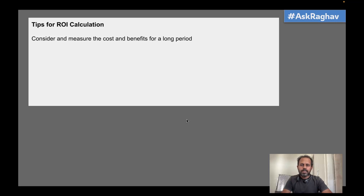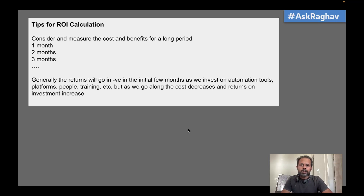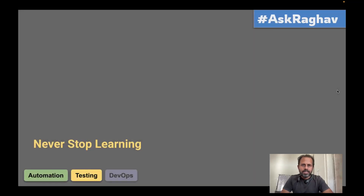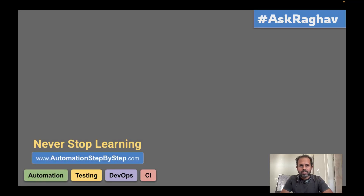Some tips for ROI calculation: consider it for a long period, not just one time. Create metrics for monthly or quarterly periods showing investment and returns each month. Initially, investments will be higher and returns will be lower as you are preparing everything from scratch. As you go forward, investments come down and returns keep increasing. If you have any questions, let me know in the comments. Thank you for watching and never stop learning.